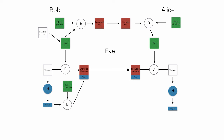When Alice receives the message she takes the attached signature from the packet and decrypts it with Bob's public key, getting an unencrypted digest. She then calculates her own digest of the decrypted message and compares the two digests. If the digest she calculated by hashing the plain text message is the same as the digest she decrypted with Bob's public key, she knows that the message is authentic. So what Bob just did — encrypting the digest with his private key and attaching that to the message — is that he signed the message.